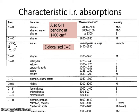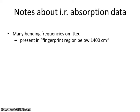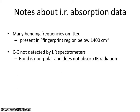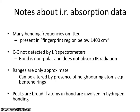So we'll just summarize now some of that. There's the idea that infrared absorption doesn't tend to worry too much about the bending frequencies and therefore we have this fingerprint region below about 1400 wavenumbers which is very hard to interpret. You can't detect carbon-carbon bonds and these ranges are only quite approximate. For example, they're often affected by the presence of things like benzene rings. And we can get broad peaks if you've got hydrogen bonding present.